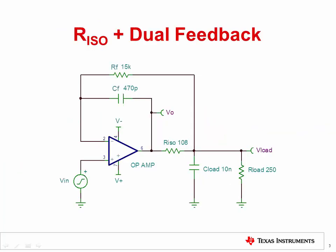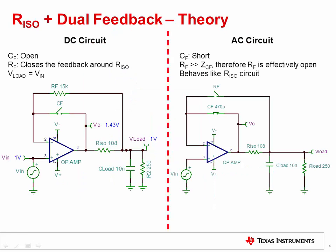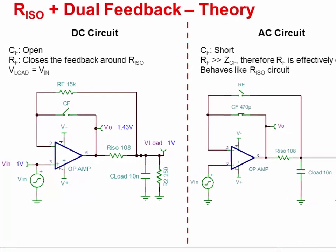A solution to the voltage drop from the R-ISO circuit is to implement the R-ISO plus Dual Feedback circuit. The operation of this circuit can be analyzed using the equivalent DC and AC representations of the circuit.